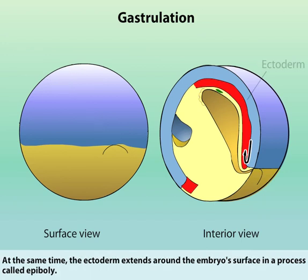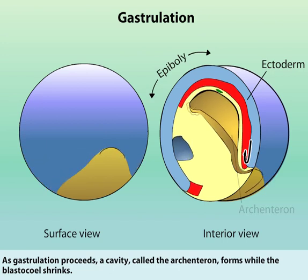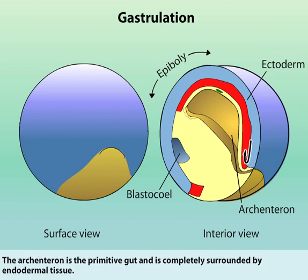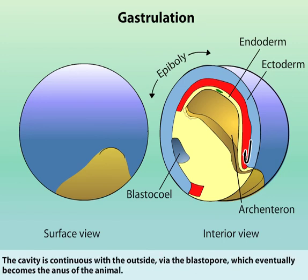At the same time, the ectoderm extends around the embryo surface in a process called epiboly. As gastrulation proceeds, a cavity called the archenteron forms while the blastocele progressively shrinks. The archenteron is the primitive gut and is completely surrounded by endodermal tissue. The endoderm at the roof of the cavity originated from the outside of the embryo. The cavity is continuous with the outside via the blastopore, which eventually becomes the anus of the animal.